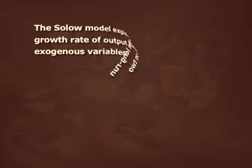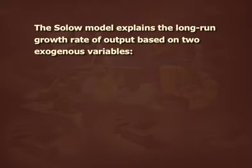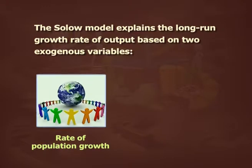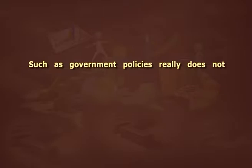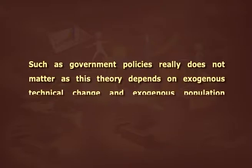Endogenous growth can be explained in that policies, internal processes, and investment capital are important factors affecting economic growth rather than external factors. The Solow model explains the long-run growth rate of output based on two exogenous variables: the rate of population growth and the rate of technological progress, both independent of the saving rate. In the neoclassical theory the long-run growth rate depends on exogenous factors, hence it has few policy implications — government policy does not really matter. The new growth theory is an extension of the neoclassical growth theory, introducing endogenous technical progress in growth models.